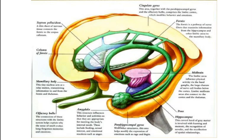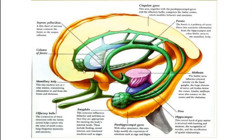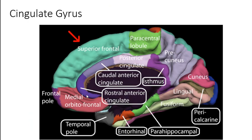All these areas relating to each other form the very complex limbic lobe. The cingulate gyrus is divided into a rostral anterior cingulate, a caudal anterior cingulate, a posterior cingulate, and an isthmus — through which the cingulate gyrus joins the parahippocampal gyrus. Rostral means facing the nose, caudal means towards the tail.